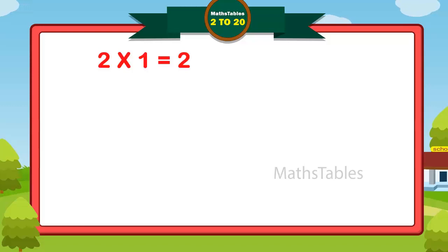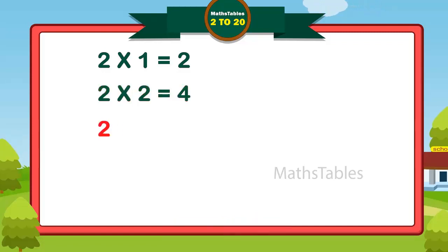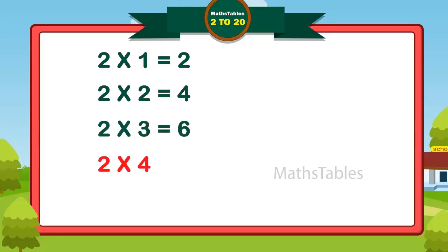Two ones are two. Two twos are four. Two threes are six.